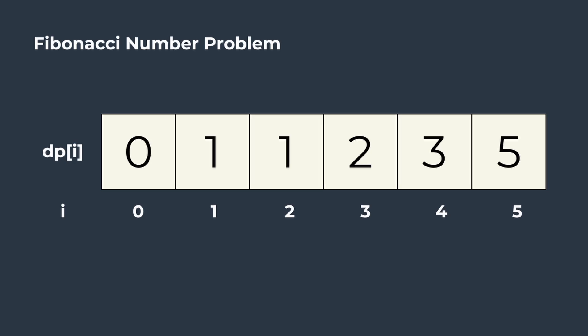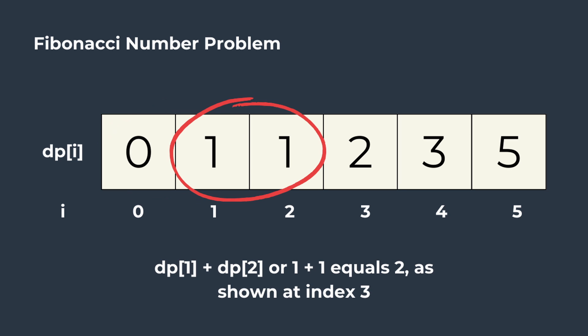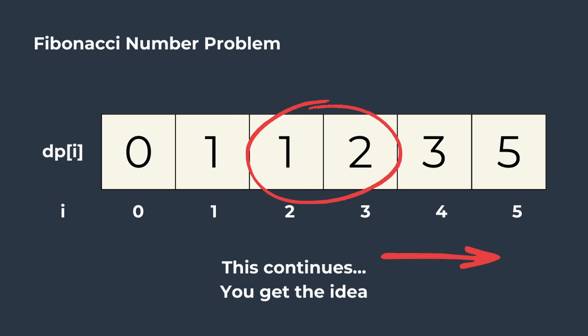Looking at our Fibonacci example, we can see at every index how the Fibonacci number is calculated by looking at the previous two indexes and adding them. This continues until we get to the final index, which will calculate the Fibonacci number of 5 in this case.